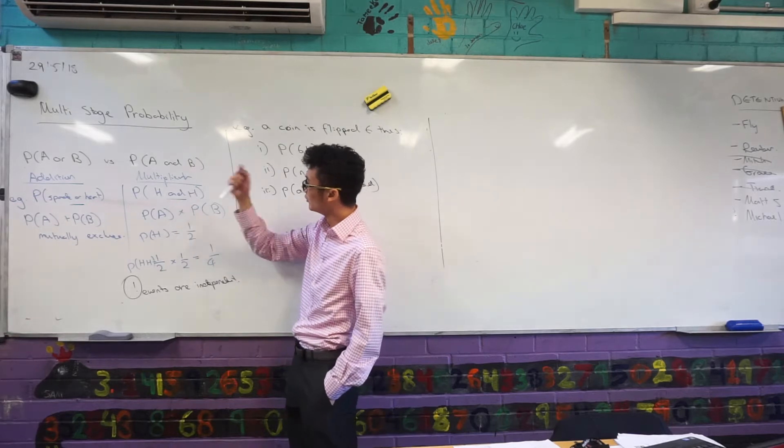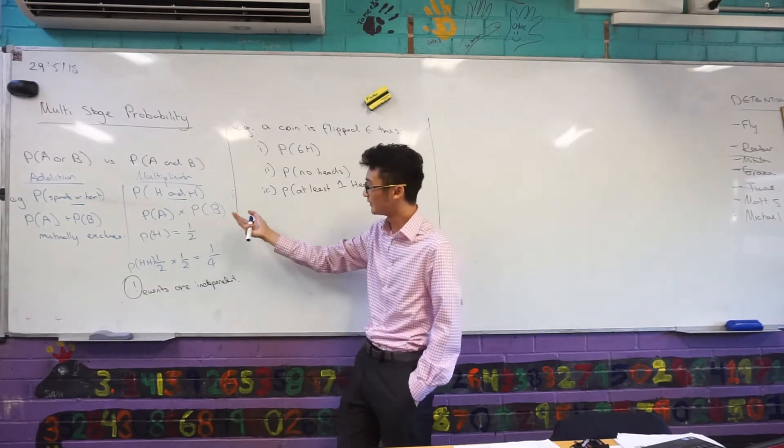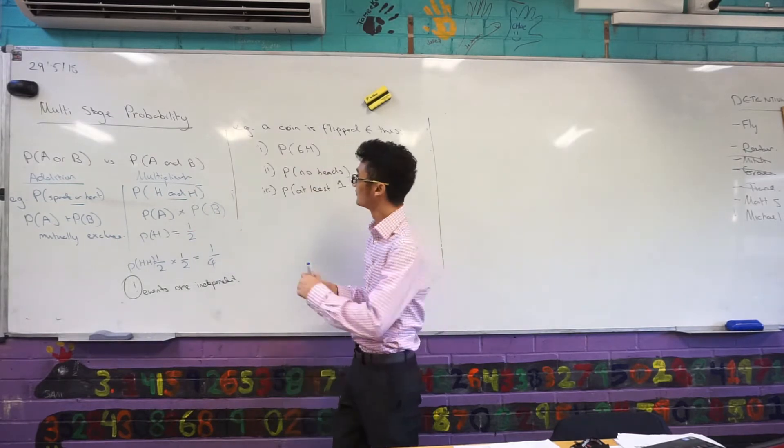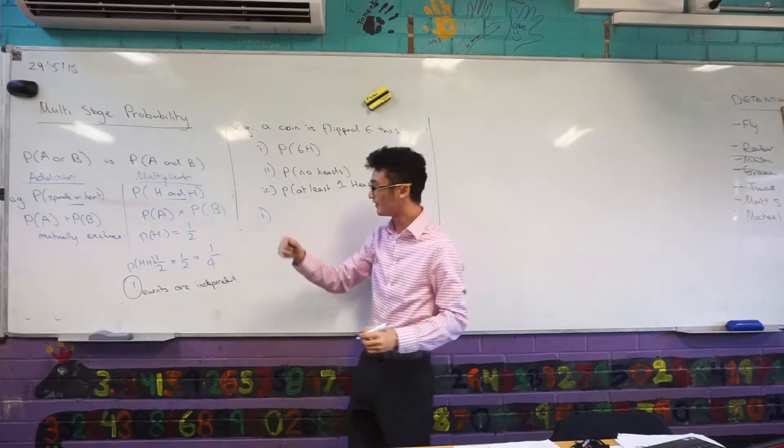And I've shown you, if I'm looking for flipping a head twice, that's just half times half. If I was looking at flipping a head six times, I could apply that same principle.